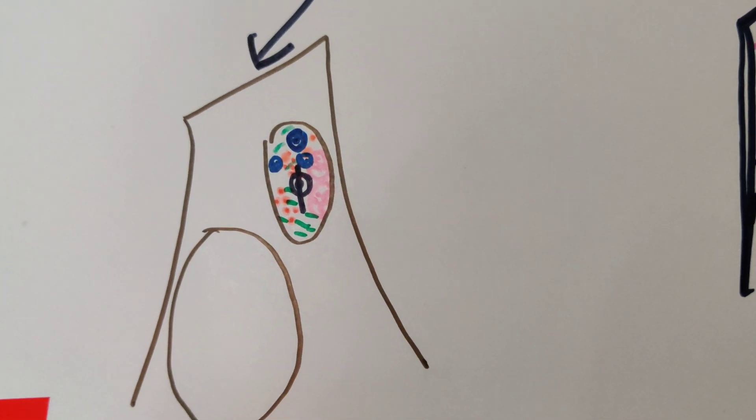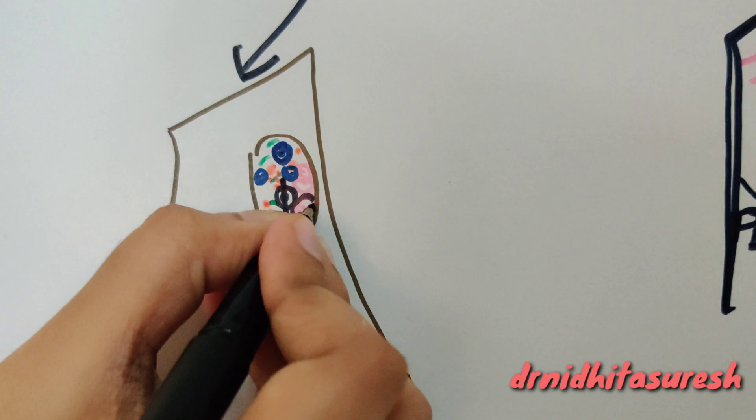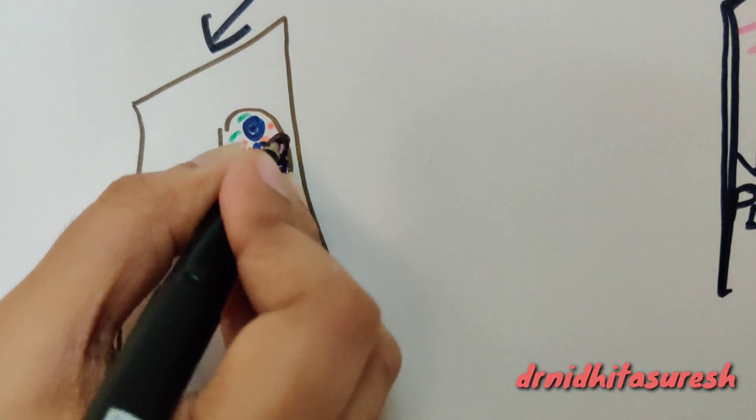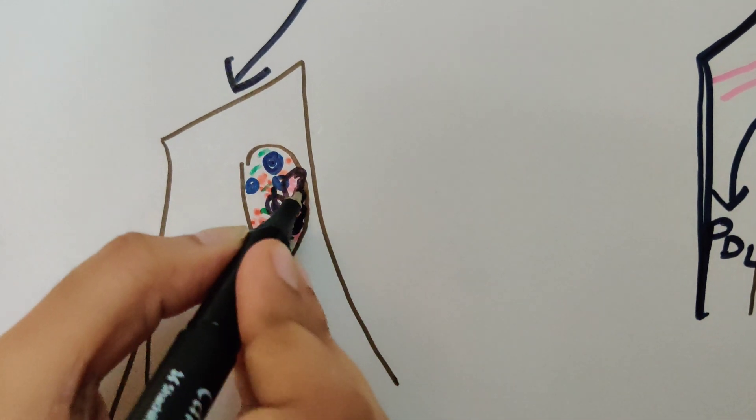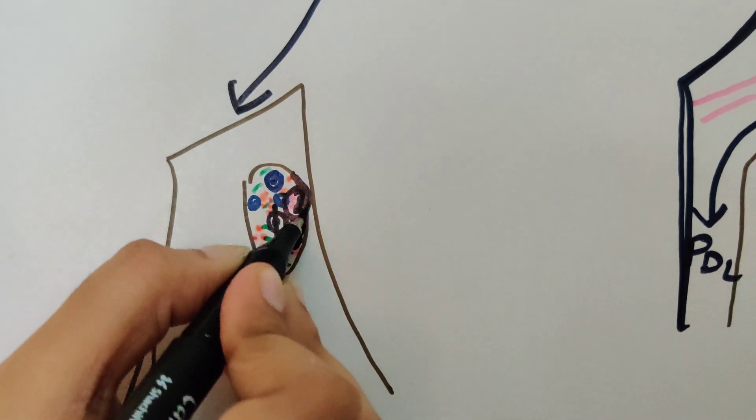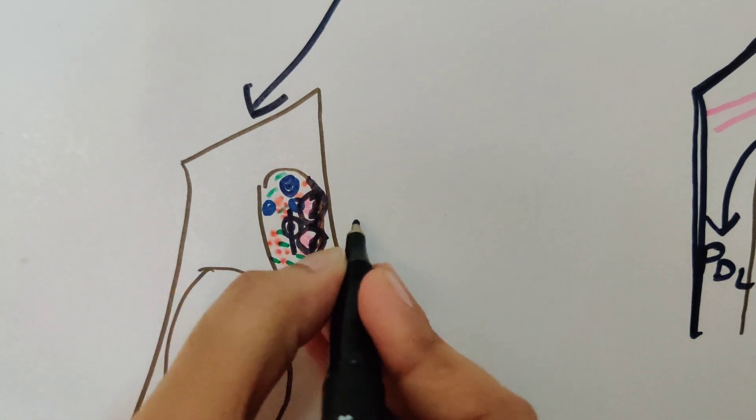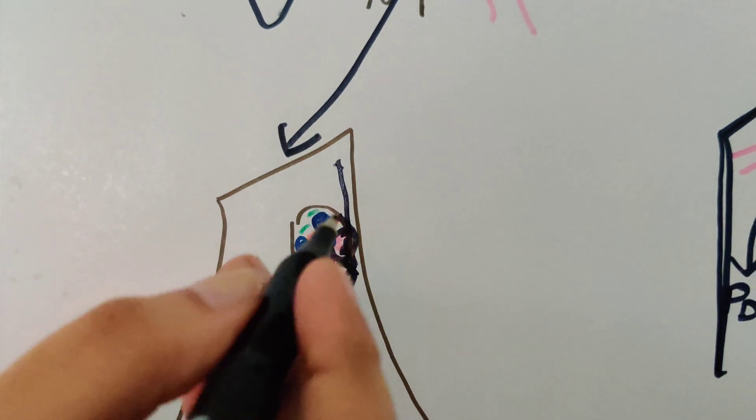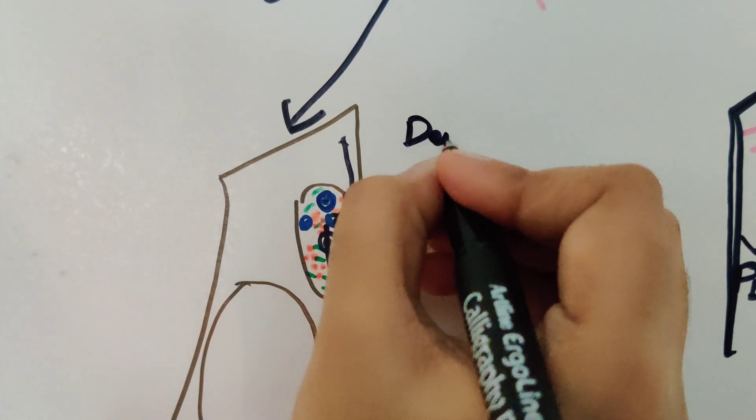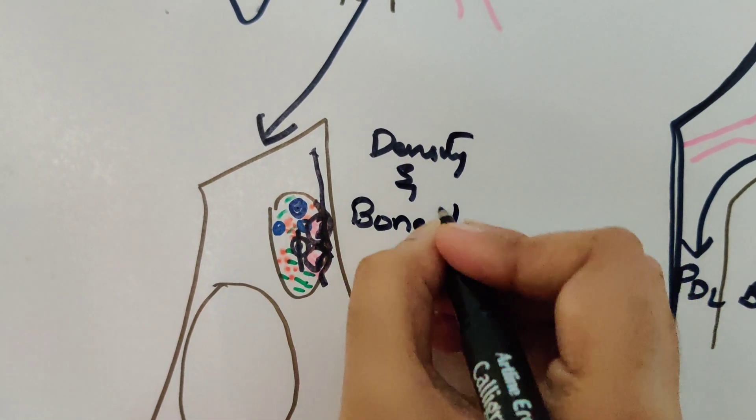Then what happens is that the number of osteoclasts and the macrophages increases. Now if you see, these osteoclasts have been lined up. What they do is that they will try to create Howship's lacunae and they'll try to start the resorption from within. This will lead to thinning of the bony trabeculae and thereby density and bone destruction occurs.